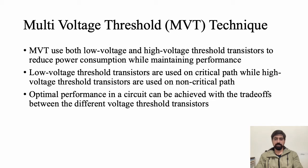Regarding the multi-voltage threshold (MVT) technique: foundries provide development kits with parameterized cells including regular, low, and high voltage threshold transistors. MVT is a technique where both low and high voltage threshold transistors are used in a given circuit to reduce power consumption while maintaining performance. Low voltage threshold transistors are placed on critical paths, high voltage threshold transistors on non-critical paths, and the designer iteratively adjusts placement to achieve optimal performance.